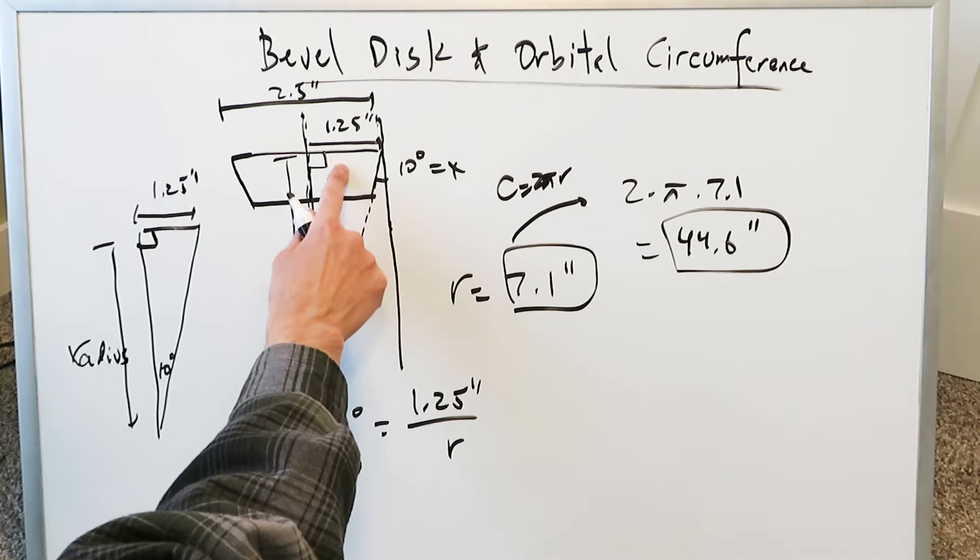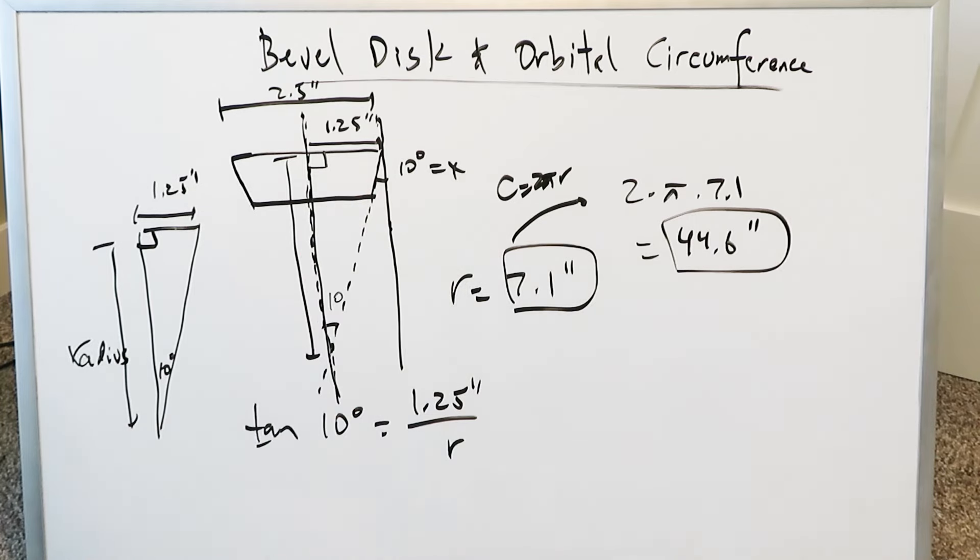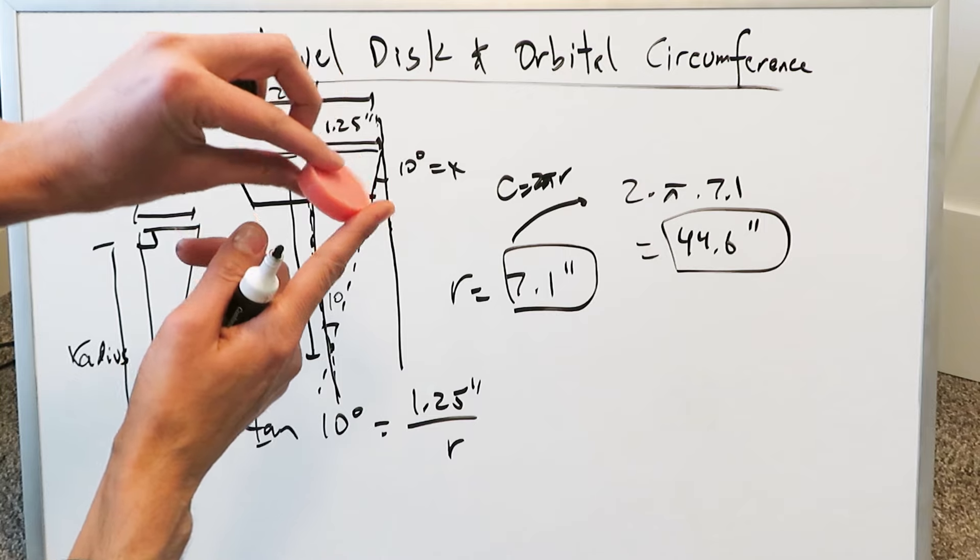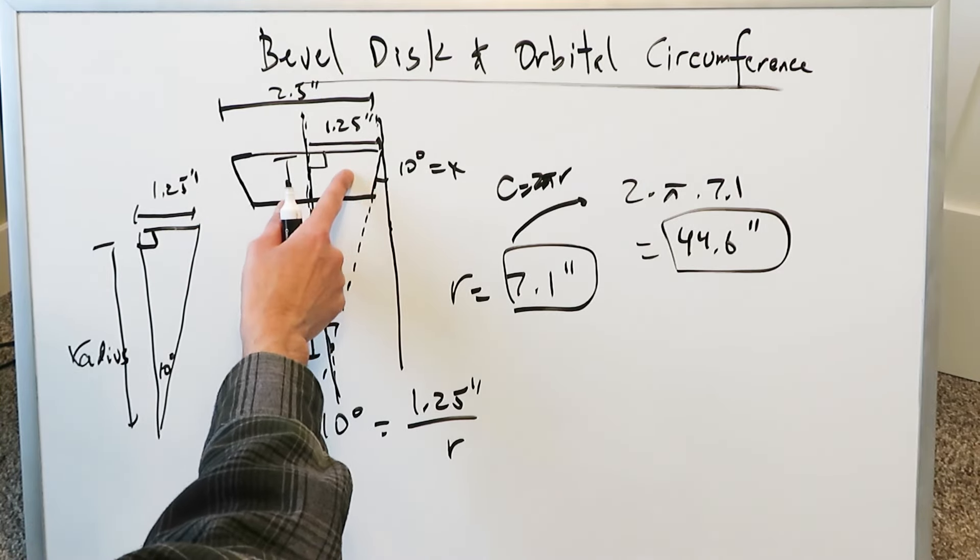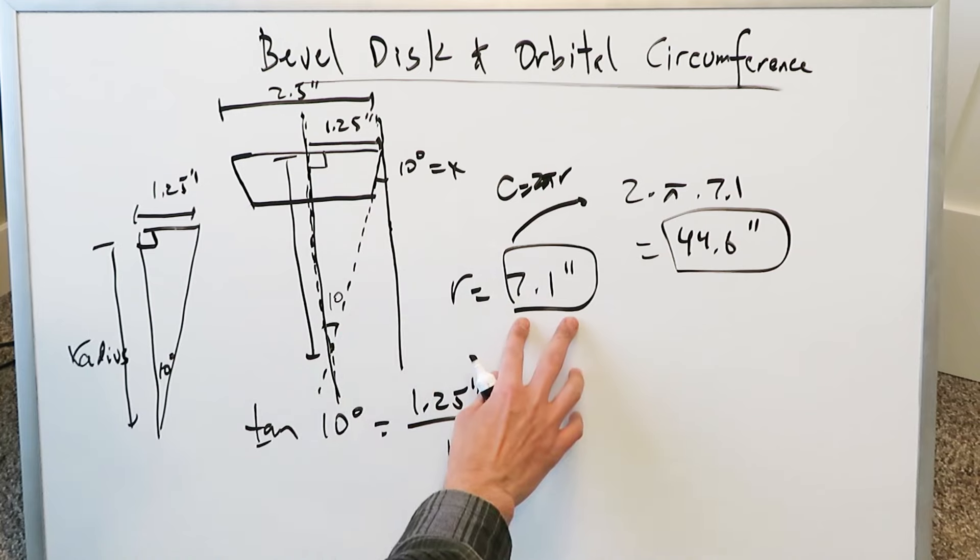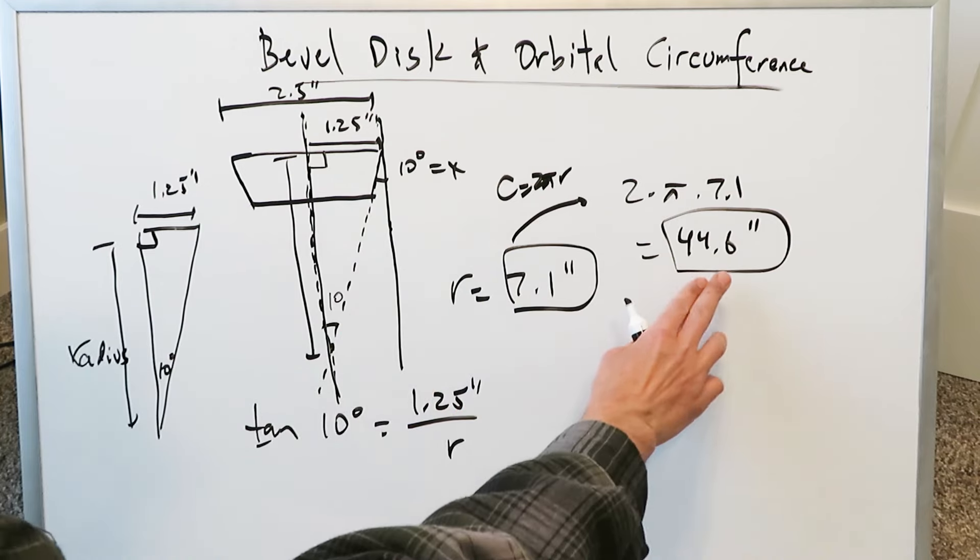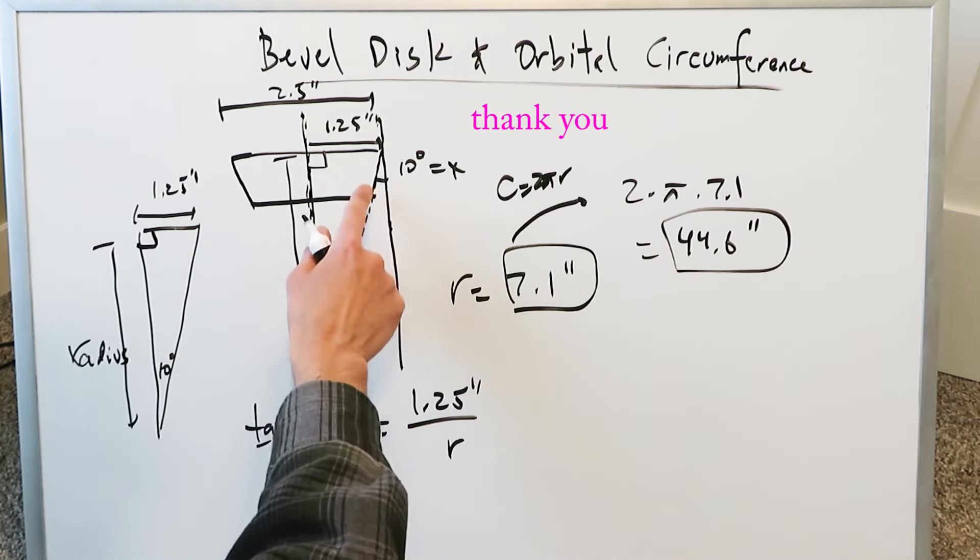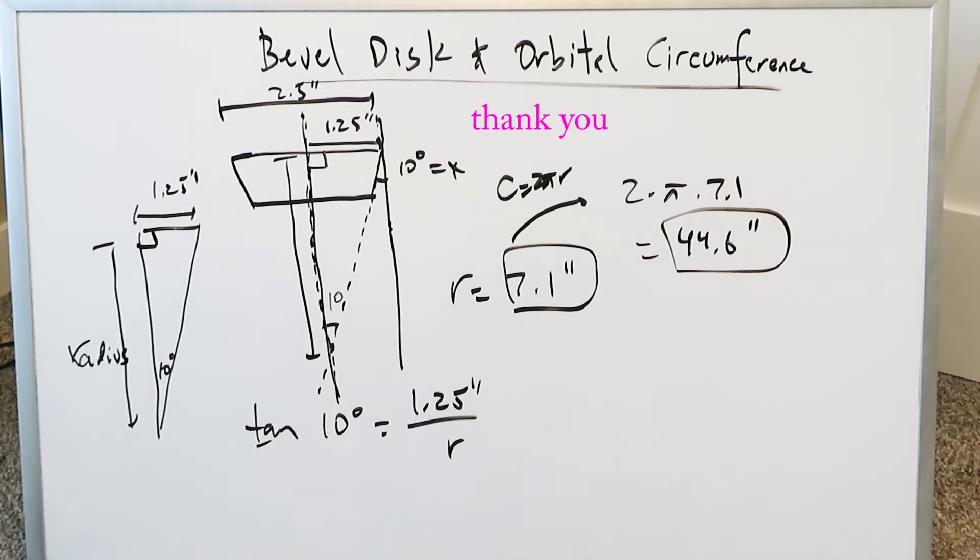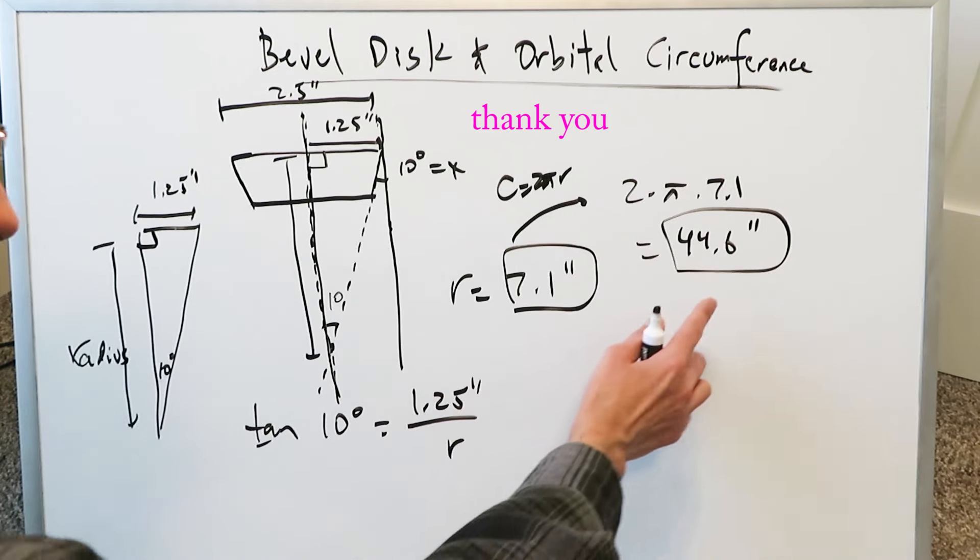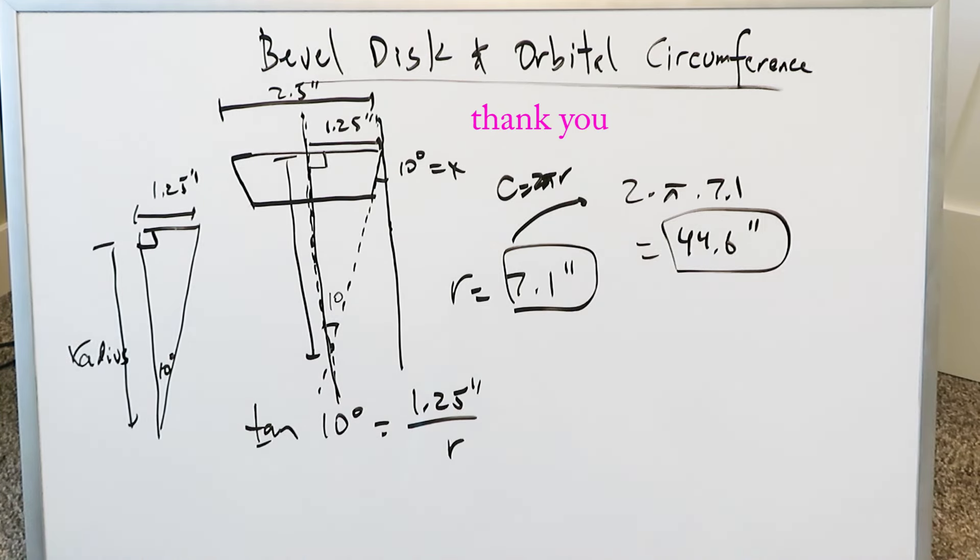As this angle becomes larger and more steep up to a certain point, because if it becomes too steep, you could never balance this on a tabletop. It'll keep falling over. But up to a certain point, as you increase the angle, this value over here will become small, and this value will become small as well. If you decrease the angle like to two degrees or three degrees, a very lightly beveled disc or a cup, then it will have a pretty large radius and have an even larger circumference. And that's about all I wanted to show you in this video.